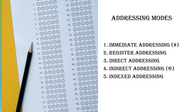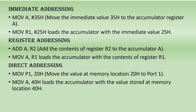We'll see all these addressing modes in detail with examples. Starting with the first — immediate addressing. The 8051 supports several addressing modes that determine how operands can be accessed. These modes determine how the CPU retrieves data for an operation. In immediate addressing, the operand is a constant value such as 35h or 25h.